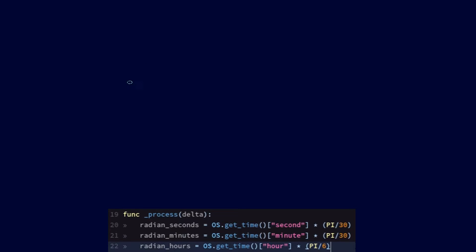I know that for a second pointer to move all 360 degrees around the clock, it would have to move 60 seconds. Knowing that 360 degrees in a radian value would be 2 pi, I concluded that I could set 60 seconds to be equal to 2 pi. Because if I wanted the value of 60 seconds, I wanted this to turn into a 2 pi radian.